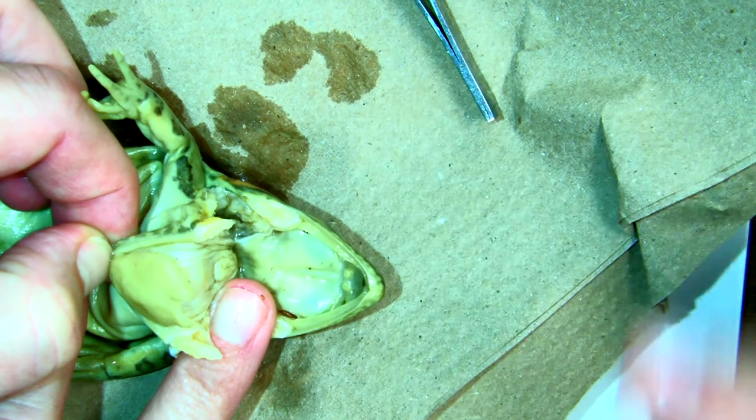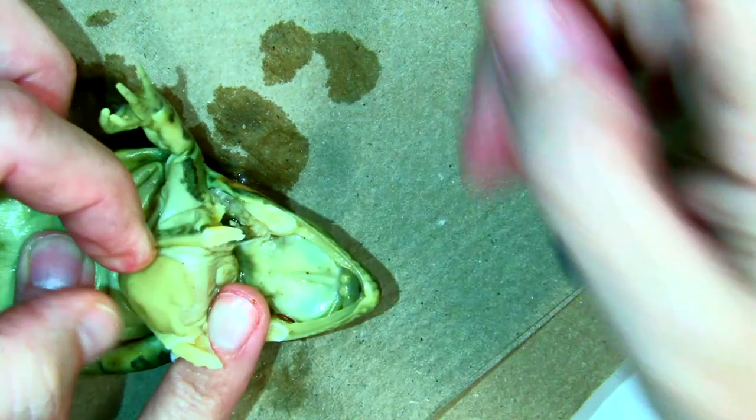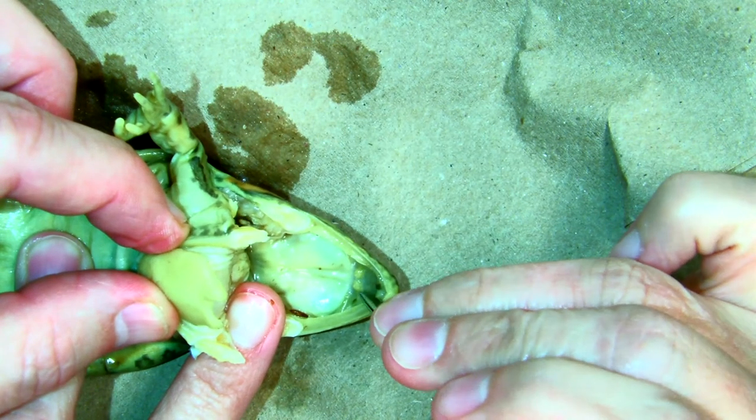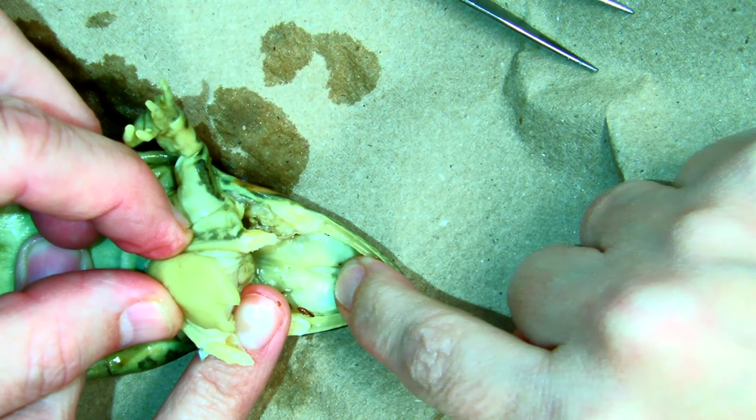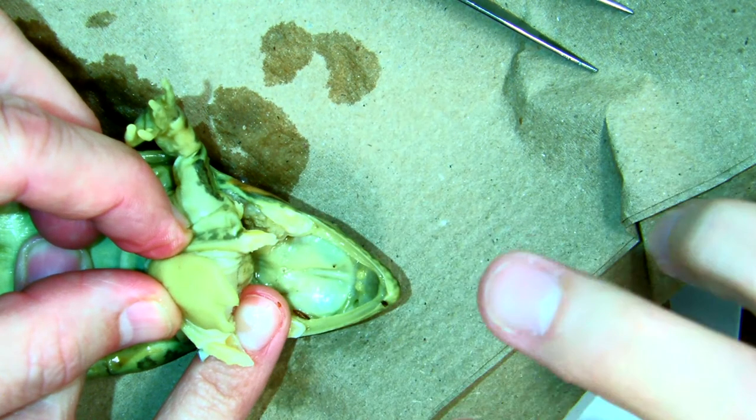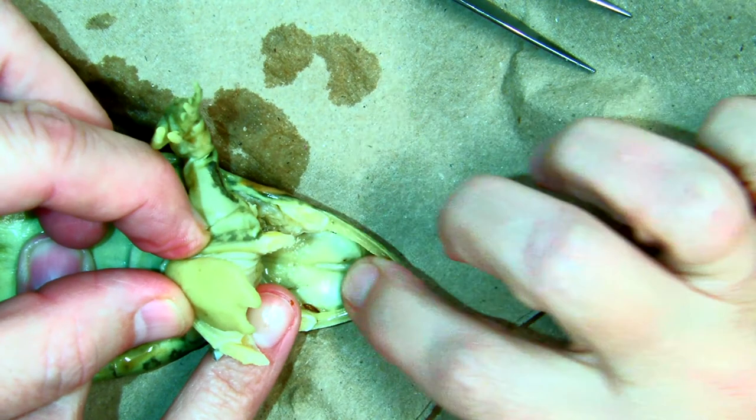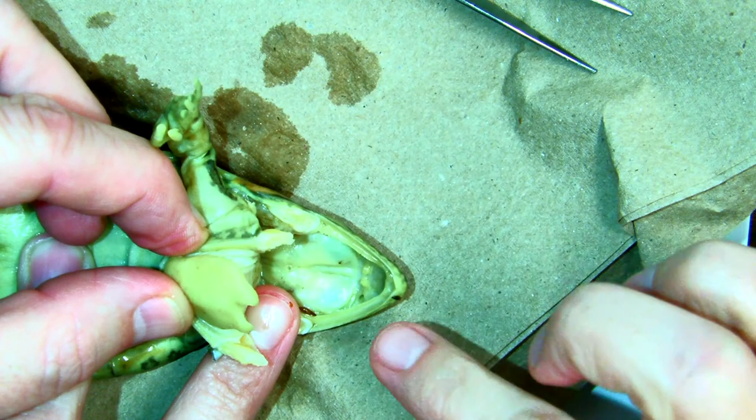And then the last thing that they have to keep prey in their mouth and from coming out are these two little bumps here. These are called vomerine teeth. And if you get your finger and act like you're prey in there and kind of try and get out, you can feel that they're almost like Velcro. They're not letting the prey come out. It's not meant to break up the prey. It's just meant to hold on to them because they swallow their prey whole.